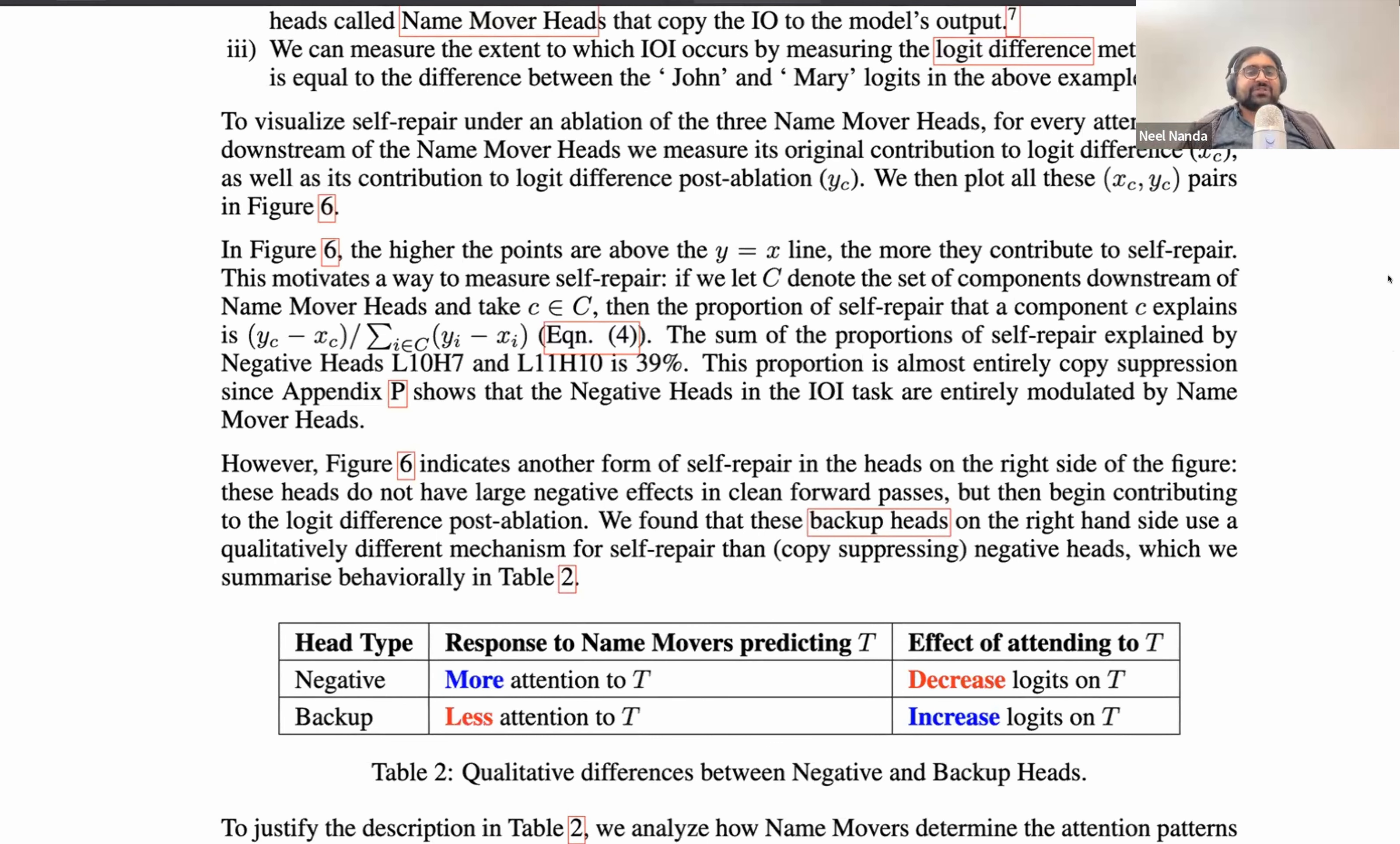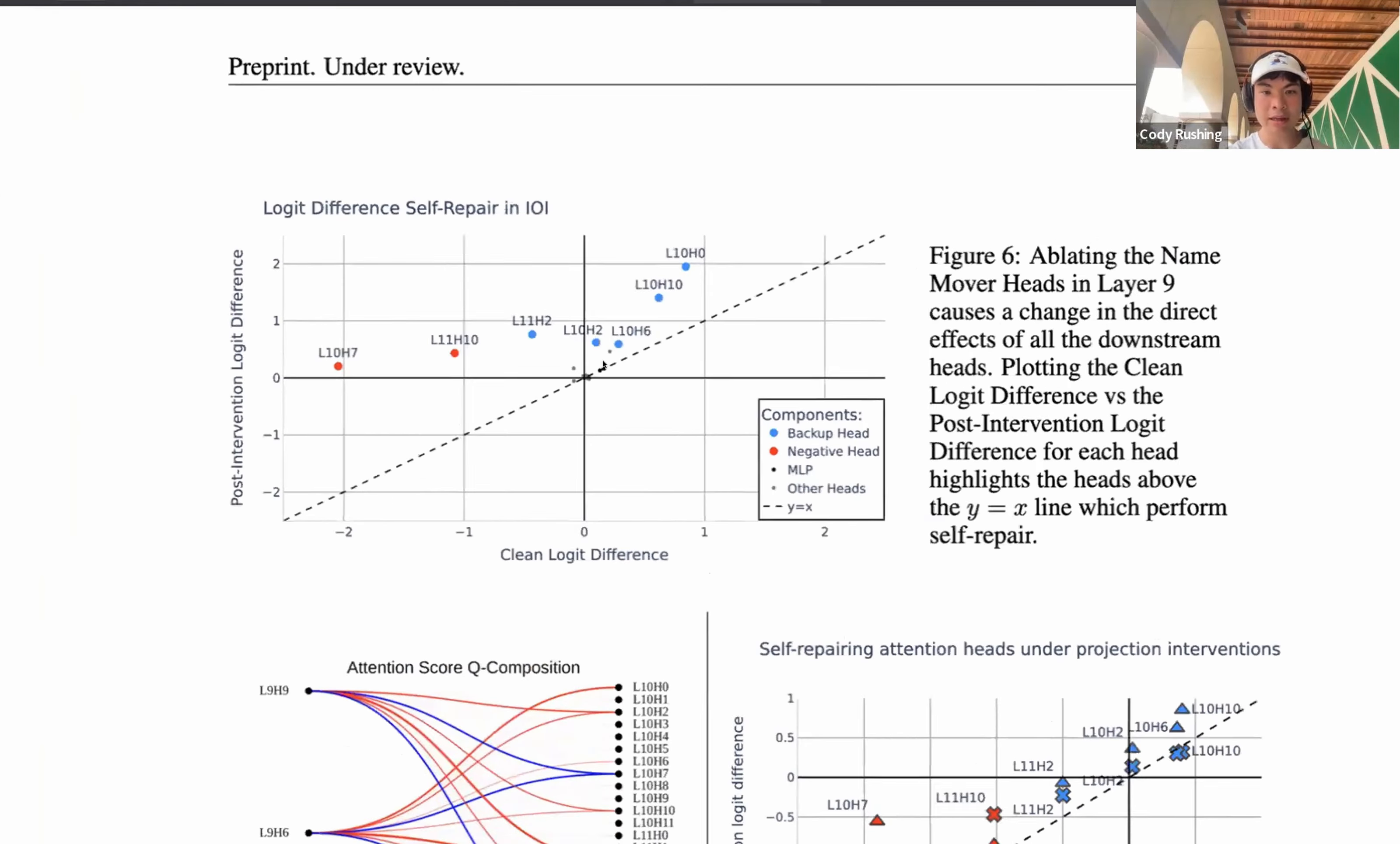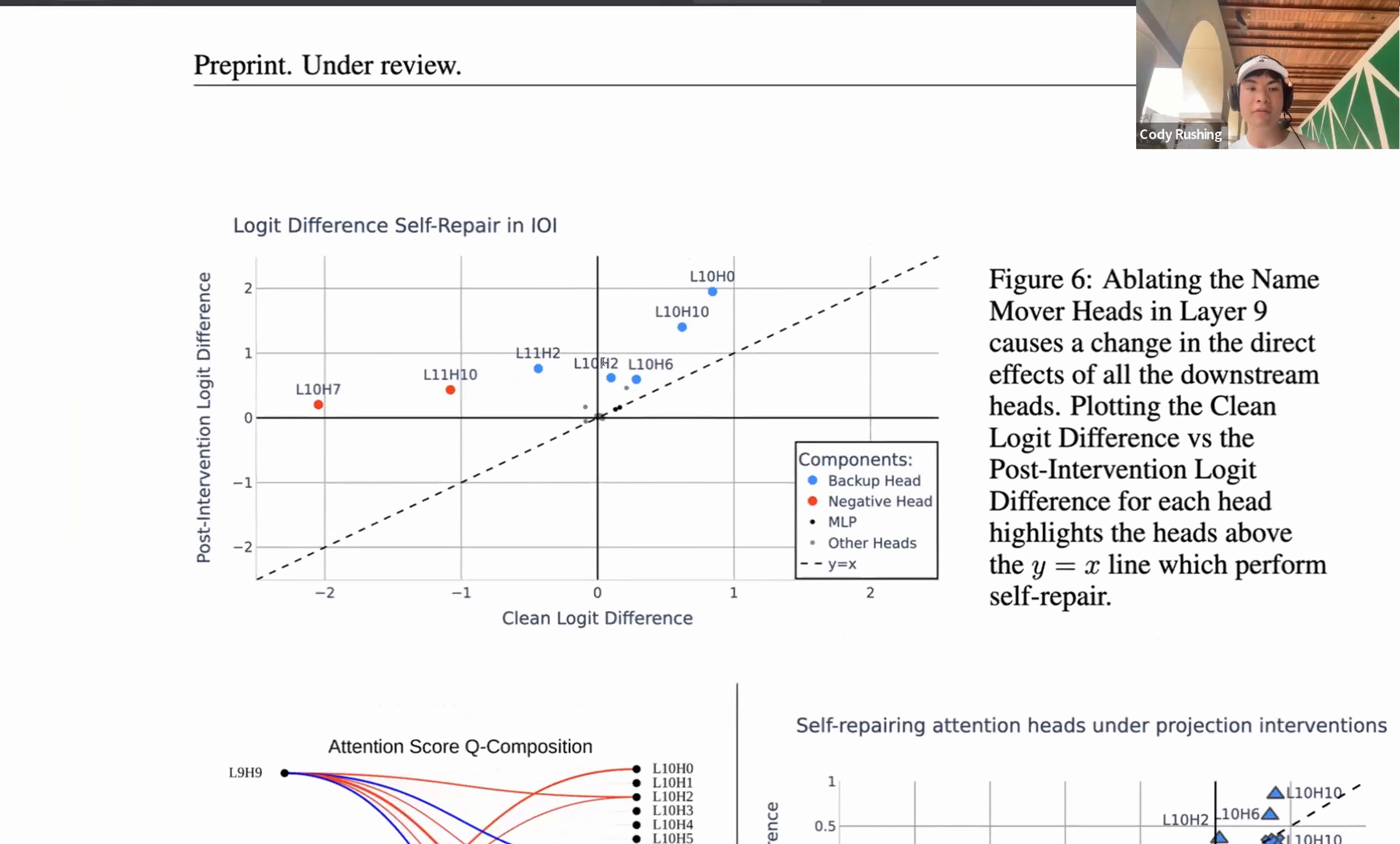I believe our headline figure is 39%. Yeah. So one relevant plot that we have here is a graph of the clean logit difference versus the post-intervention logit difference of every single head upon ablations of name mover heads in layer 9. So there's a couple of things going on here. Let's break it down. Firstly, the logit difference. This is a measurement of the correct token minus the incorrect token in terms of logits. The higher the logit difference, the more accurate the model is.